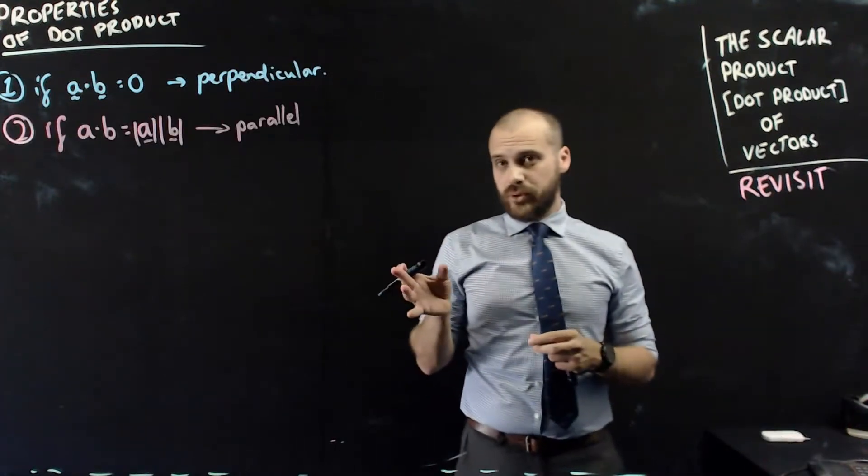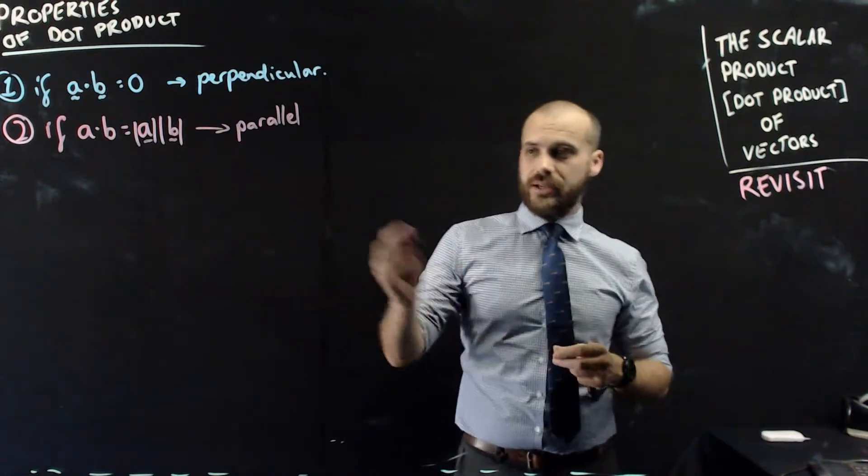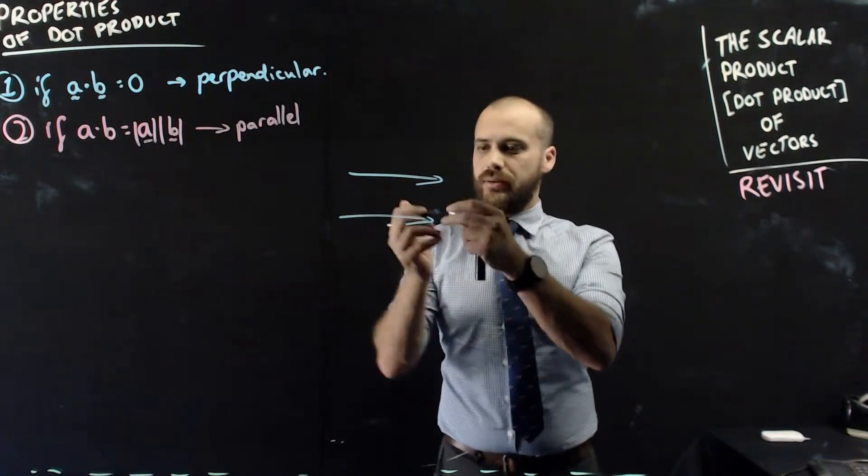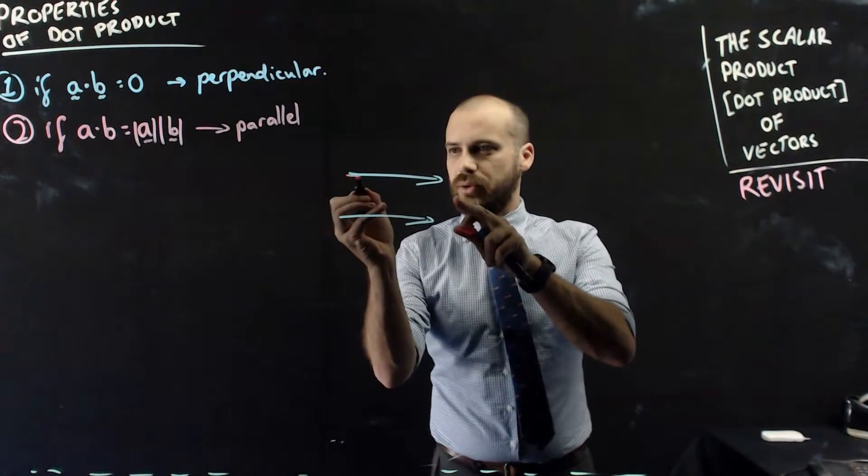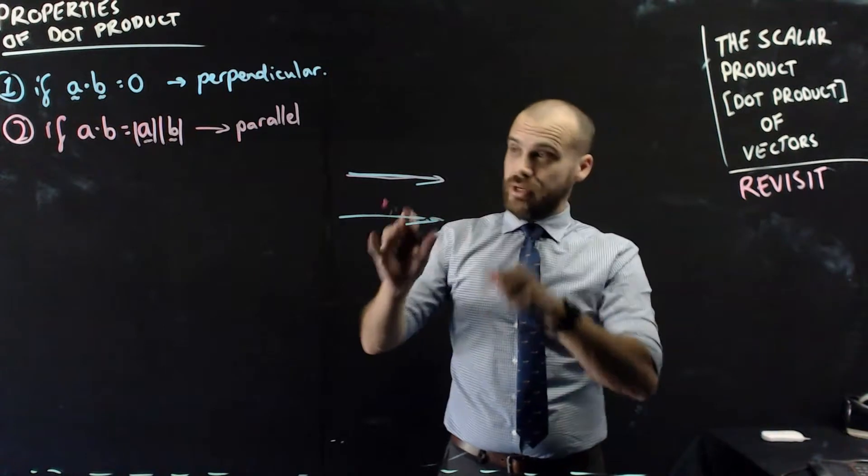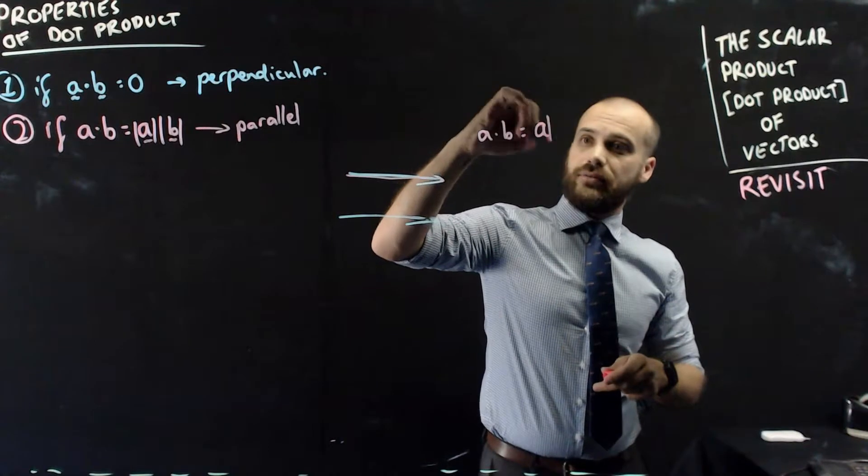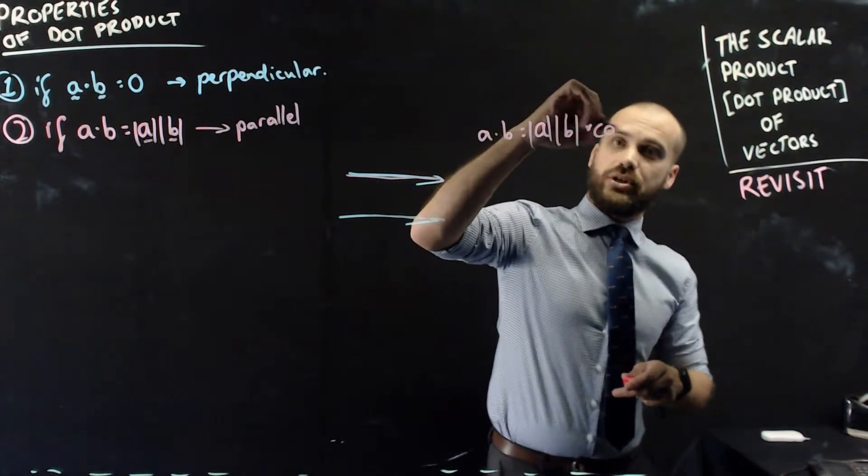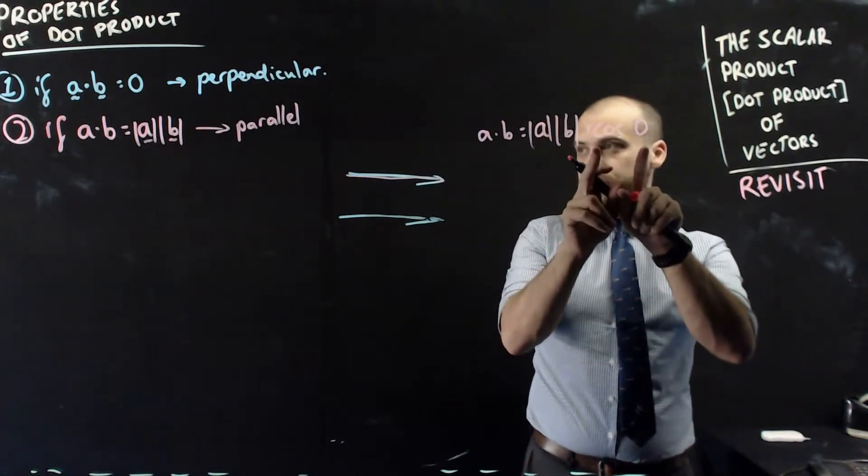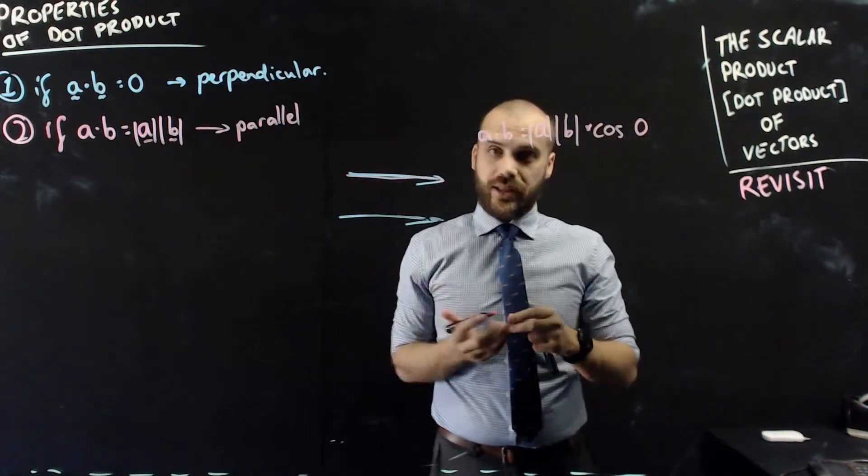Probably the second most important one, if a dot b equals the magnitude of a times the magnitude of b, then they're parallel. Again, not hard to see why. Two parallel vectors, I can pick one up and put it right on top of the other one because it doesn't matter where we draw vectors. The angle between those two vectors is 0. And if I were to put that into my dot product formula, I'll get the magnitude of a times the magnitude of b times cos 0. Cos of 0 is 1. So I get a times b times 1. That's why that works.